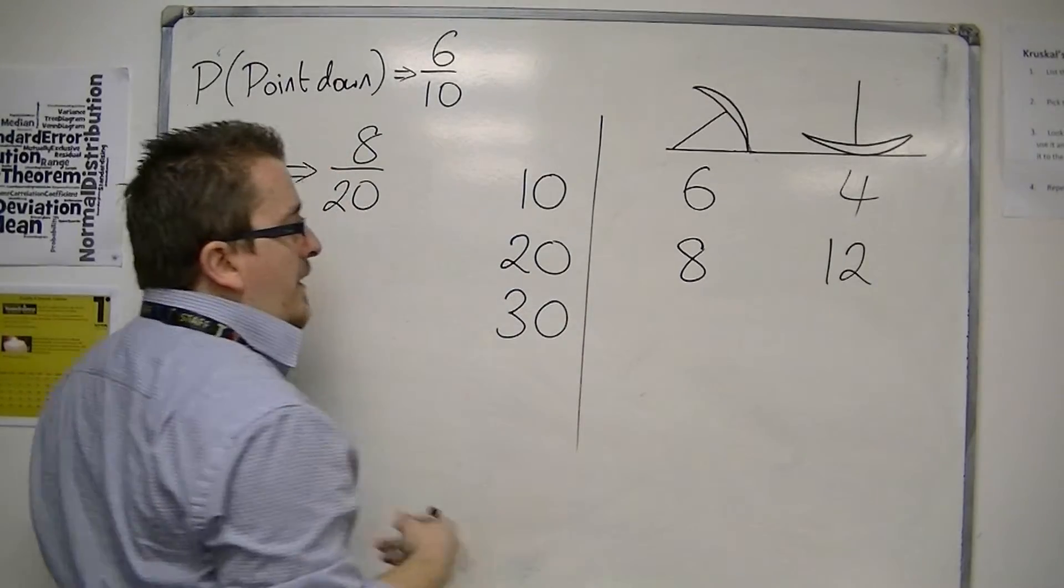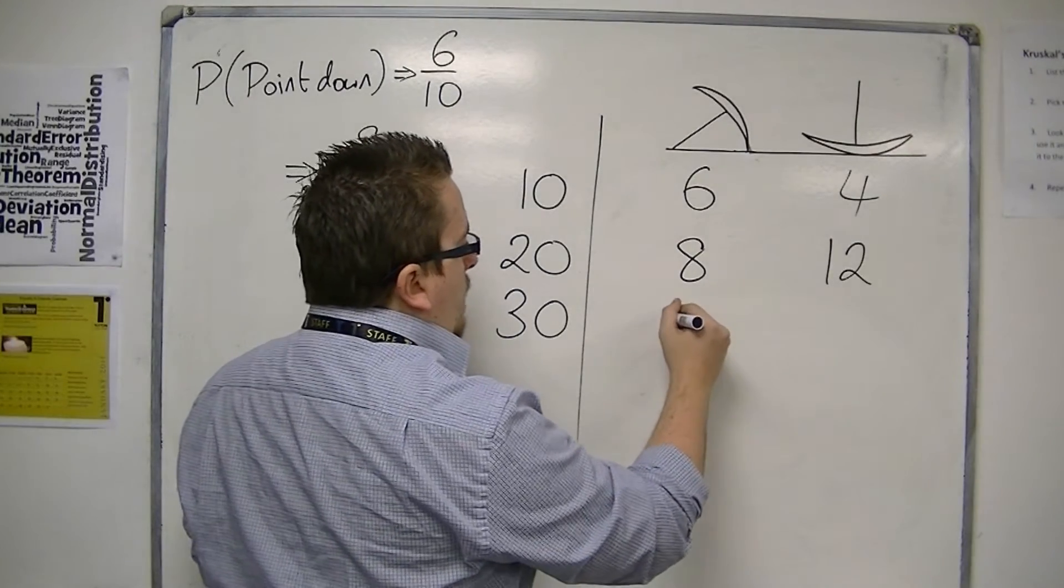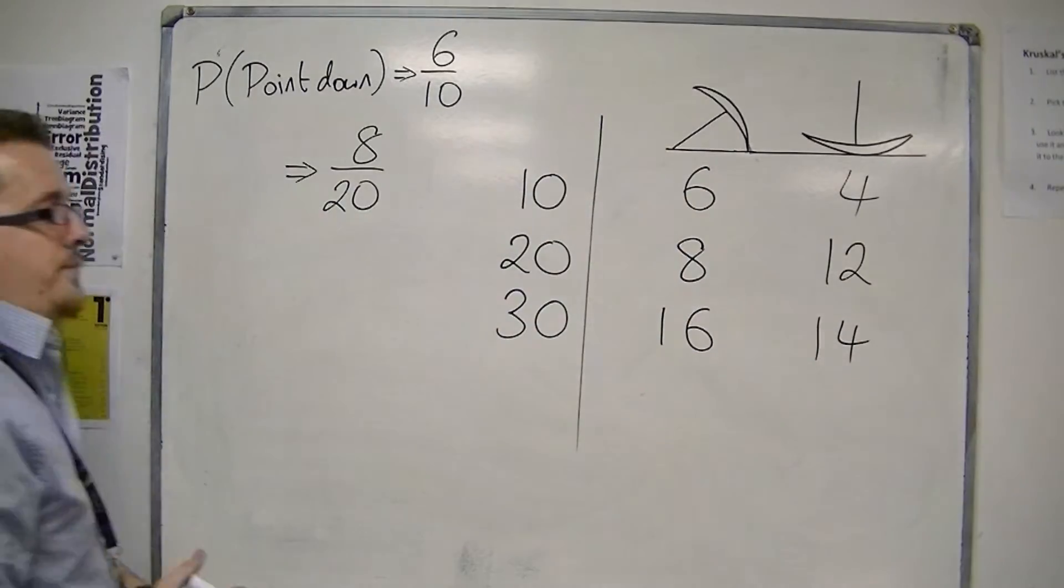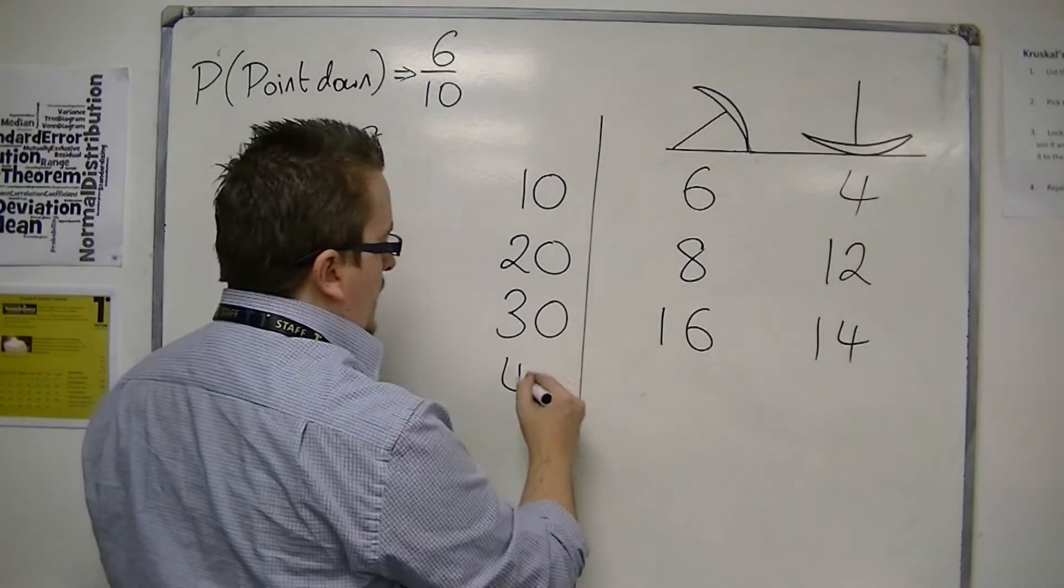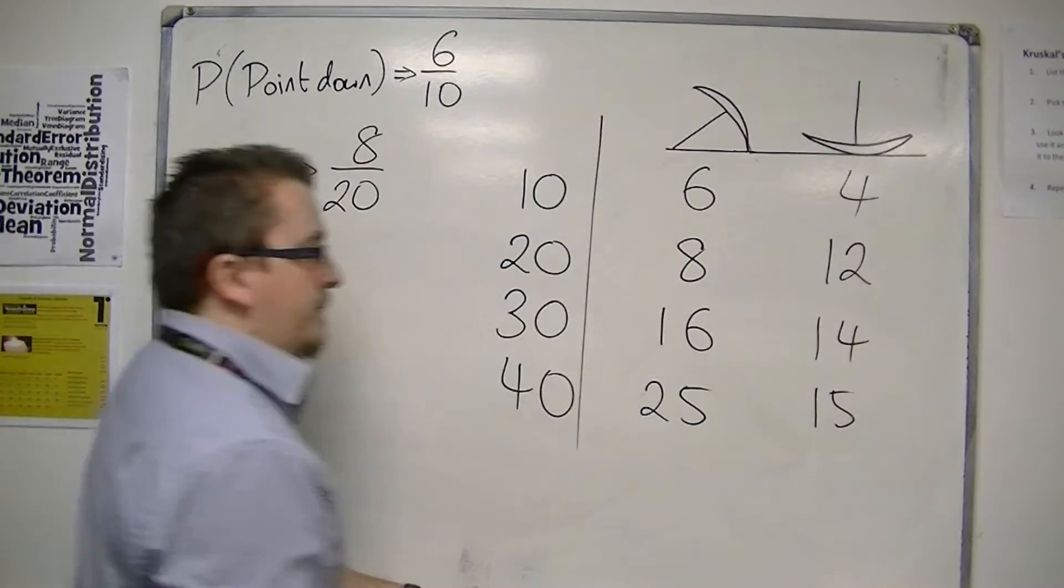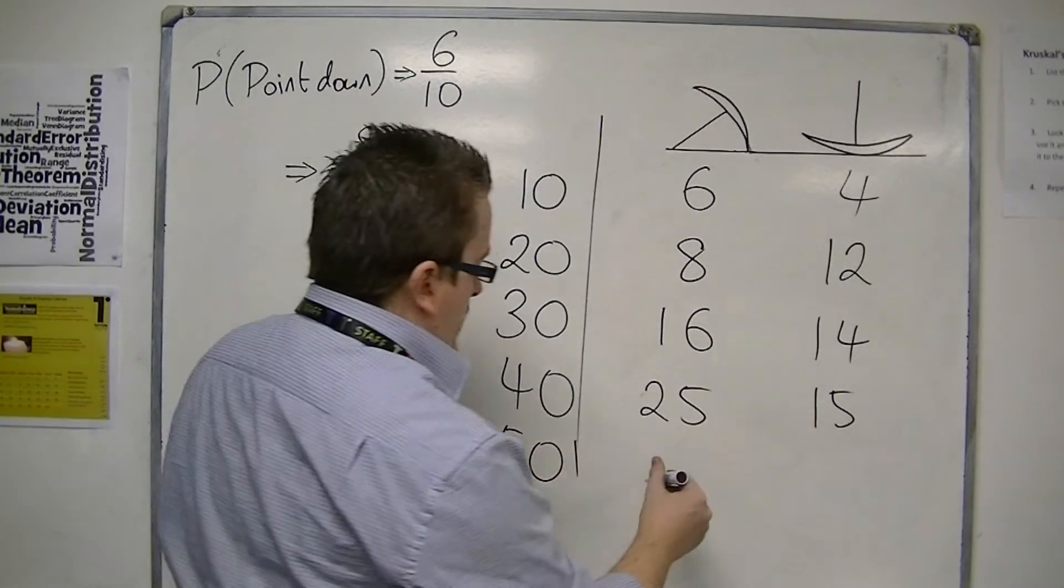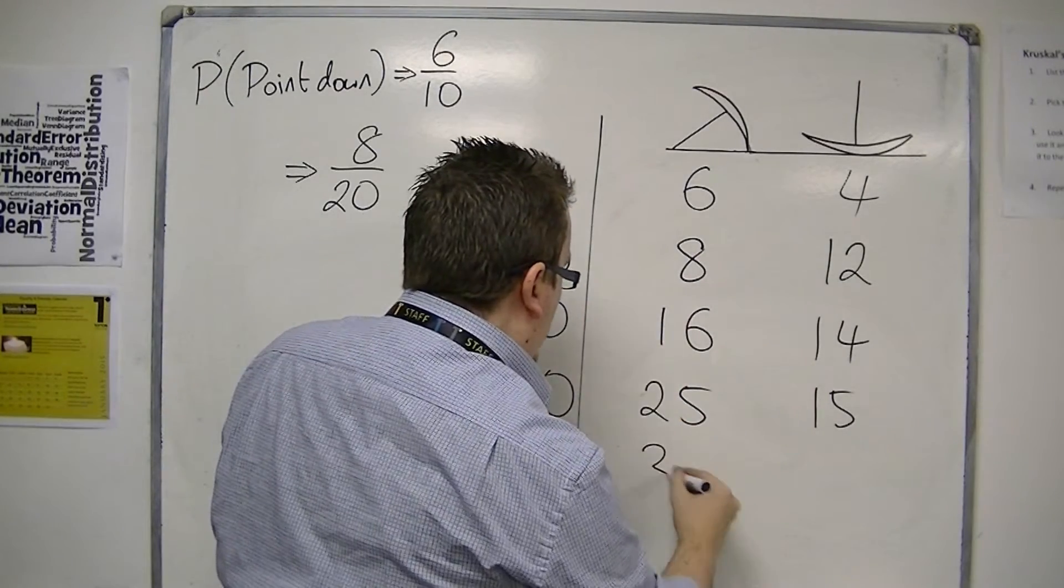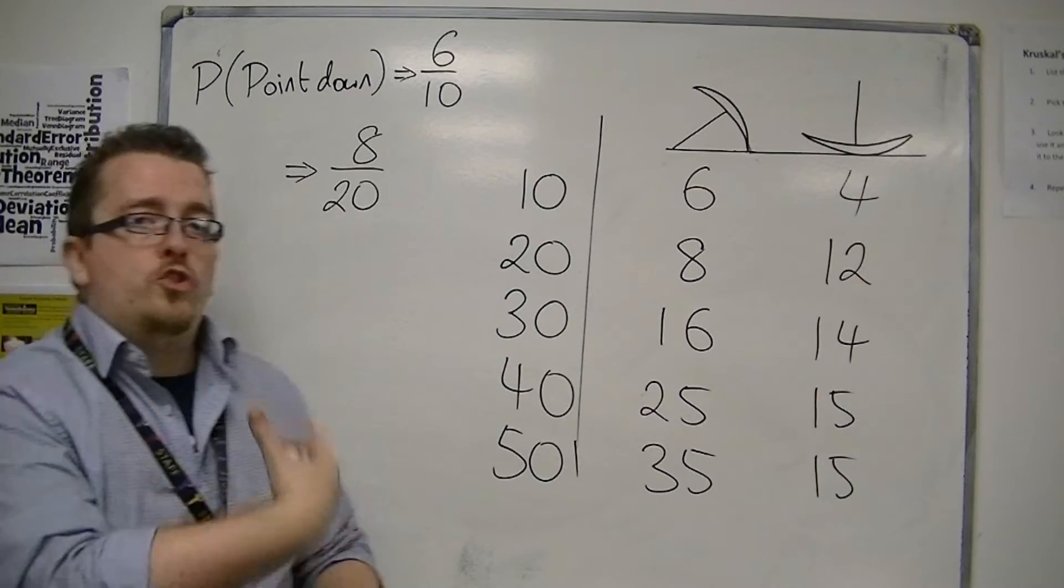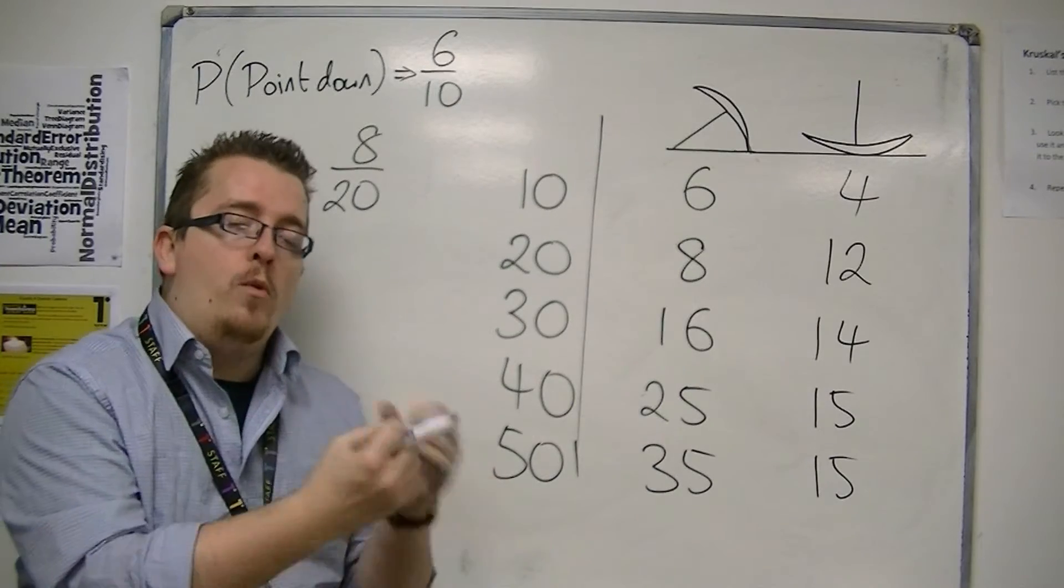But then we do another ten trials. Let's say we go up to sixteen and now we've got fourteen. And then we do another ten trials. And then we do another ten trials, and now we're up to let's say thirty-five and fifteen. So the more trials we do, the closer we would expect the probabilities to be to the actual probability.